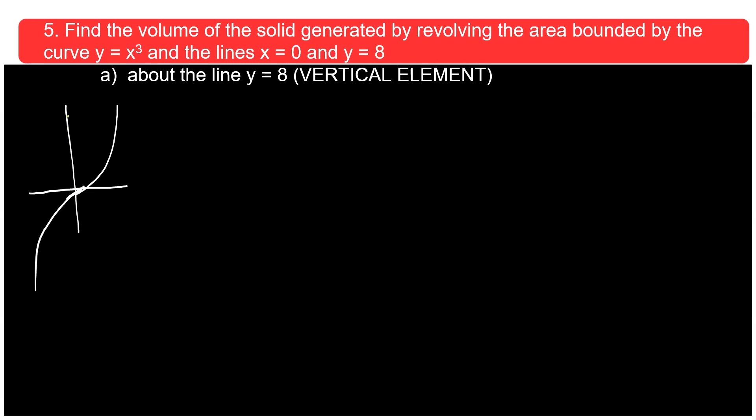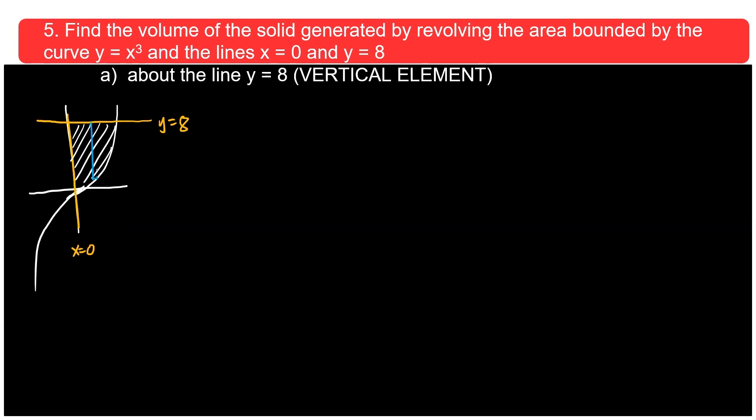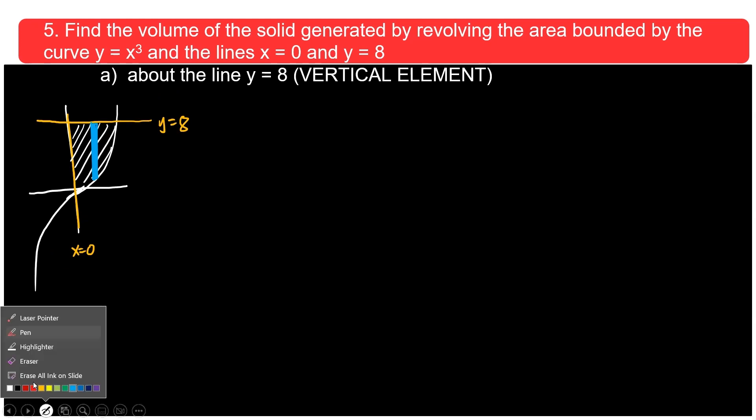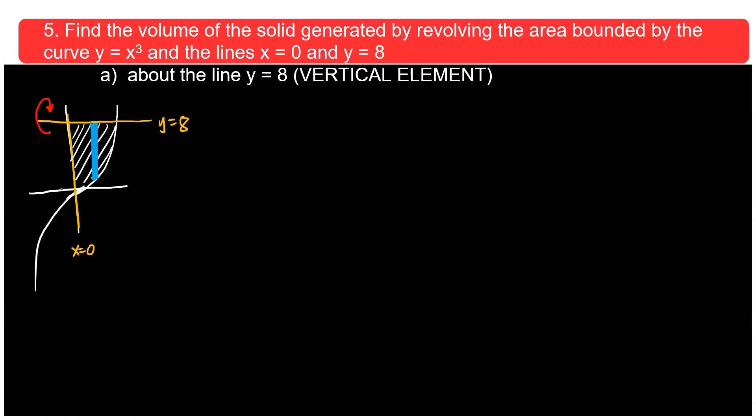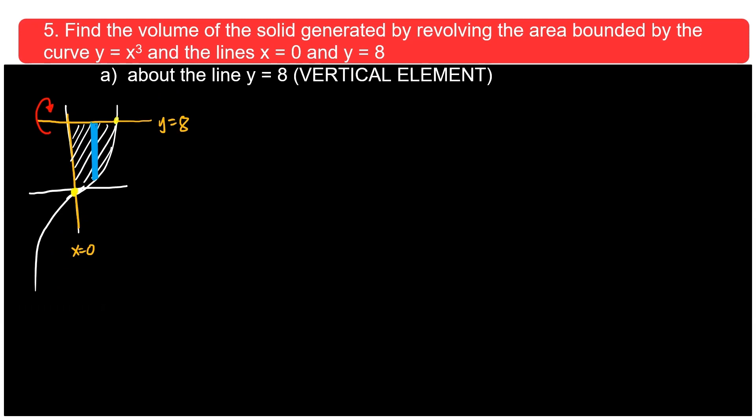Find the volume of the solid generated by revolving the area bounded by the curve and the lines. X equals 0 is the y axis. X equals 0 and y equals 8. So y equals 8, let's just say this is an arbitrary y equals 8. So the shaded portion is this portion. It says there vertical element. So let's draw our element immediately.